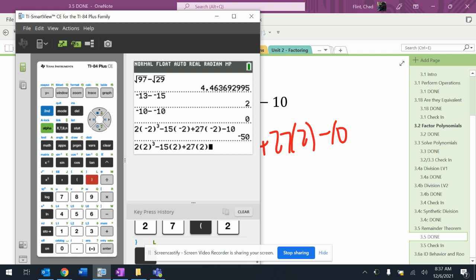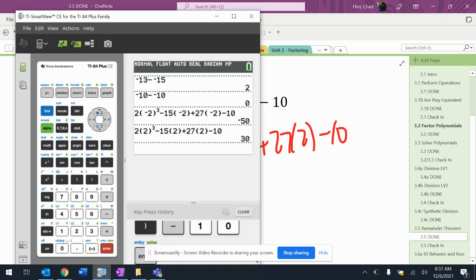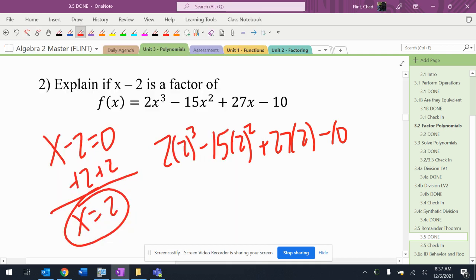That's 27 times 2 minus 10. It gives me an answer of 30 this time. So it's not equal to 0. So it's not a factor.